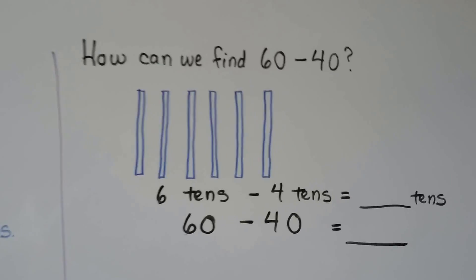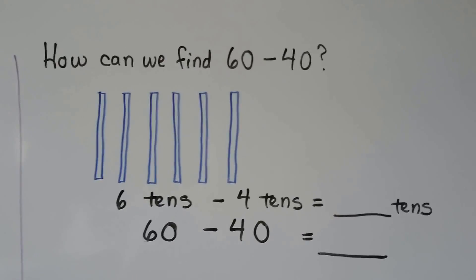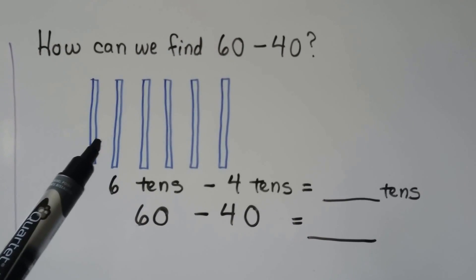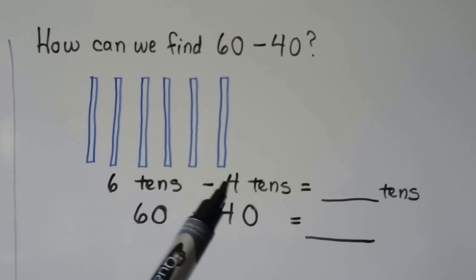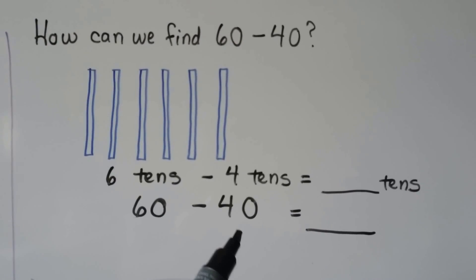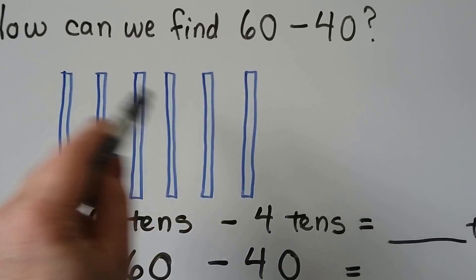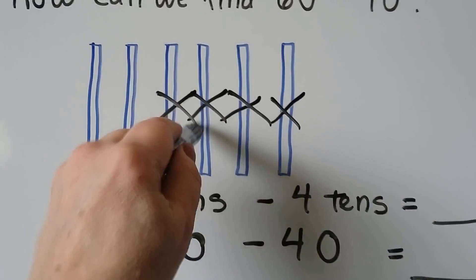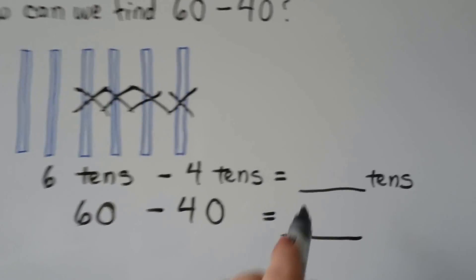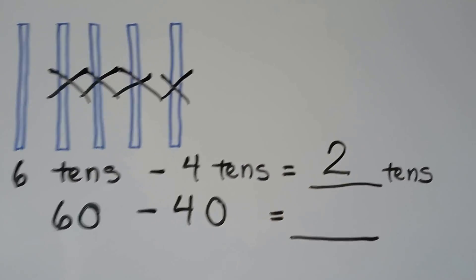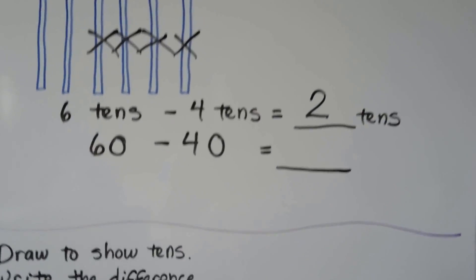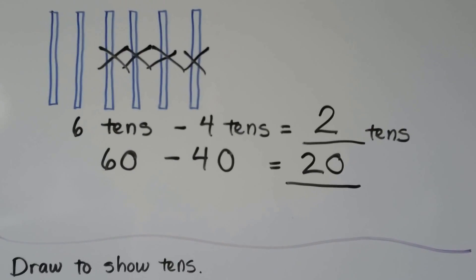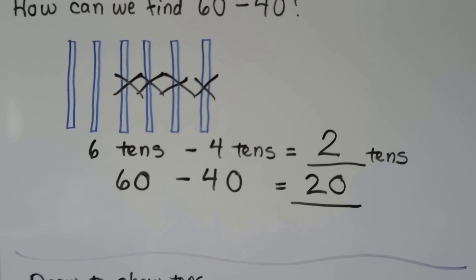How can we find sixty minus forty? We can make six tens for the sixty. We can take away four tens for the forty and see what's left over. Taking away one, two, three, four tens, we can see there are two tens left over. Two tens are equal to twenty. So sixty minus forty is equal to twenty.